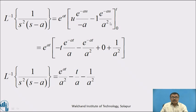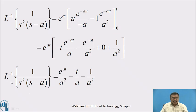Substituting the upper and lower limits: = e^(at) · [−t·e^(−at)/a − e^(−at)/a² + 1/a²]. Therefore, L⁻¹{1/(s²·(s−a))} = e^(at)/a² − t/a − 1/a².